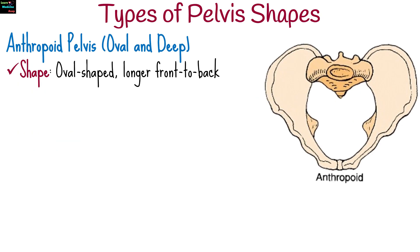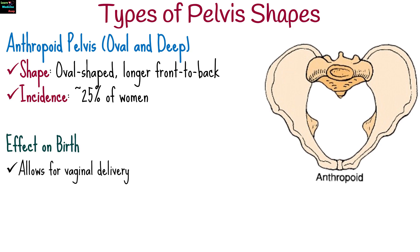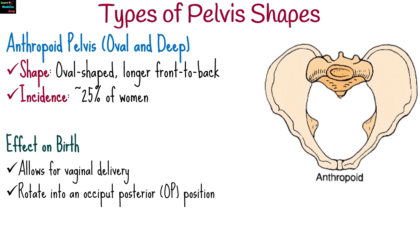Third, the anthropoid pelvis. This pelvis is oval-shaped and longer from front to back. It's found in about 25% of women. Vaginal delivery is usually possible, but the baby may rotate into an occiput posterior position, leading to back labor.